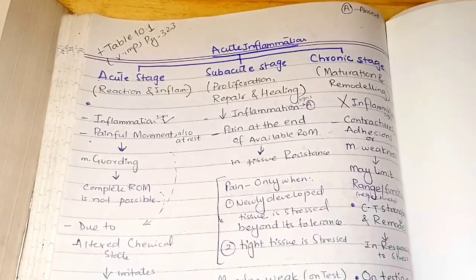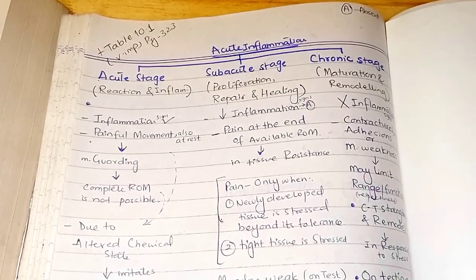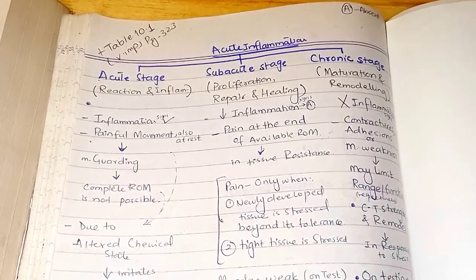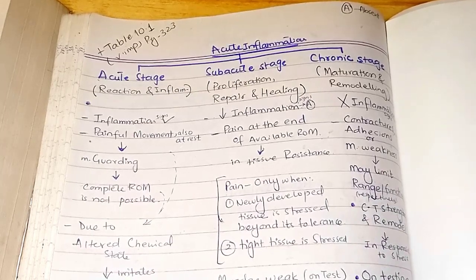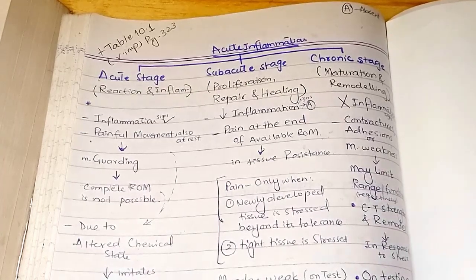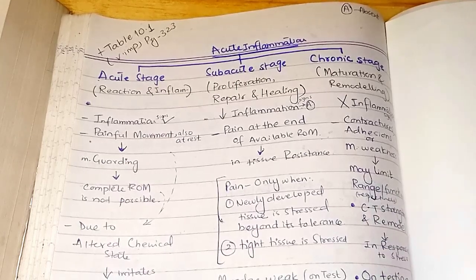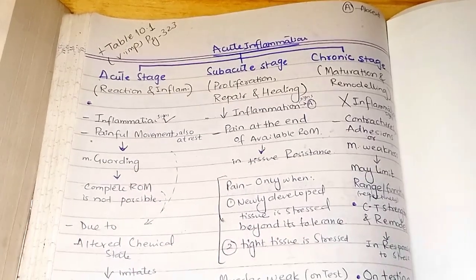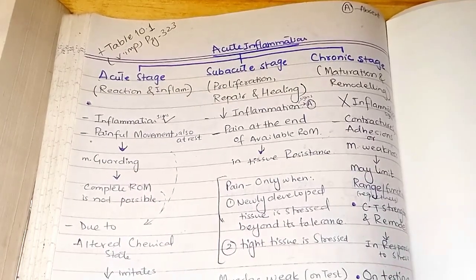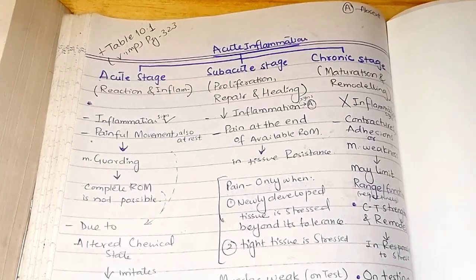Welcome back to the channel. In this video we are going to discuss the subacute and chronic stages of inflammation, and we will also discuss chronic inflammation and chronic pain syndrome. In the previous video we discussed the acute stage of inflammation. So without further delay, let's get into it. First we have the subacute stage and then the chronic stage.